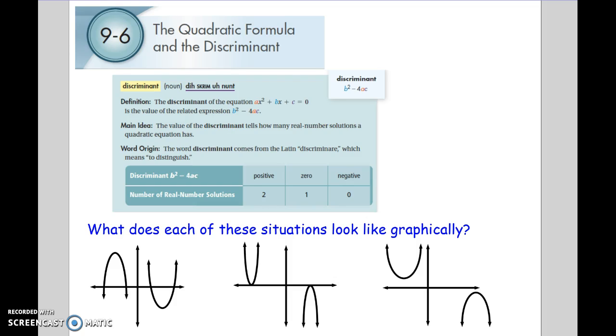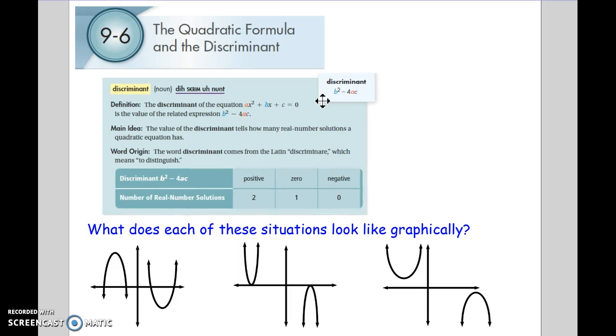The first thing that we're going to look at is the discriminant, which is part of the quadratic formula, but the discriminant tells us how many solutions we'll have. So the discriminant is here, b squared minus 4ac.